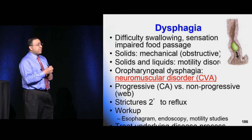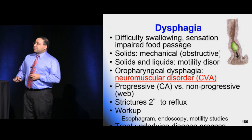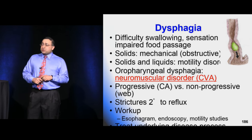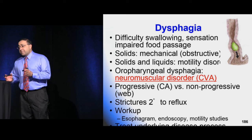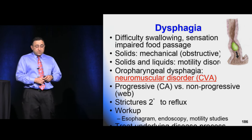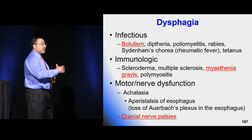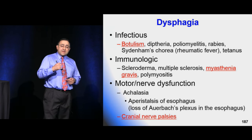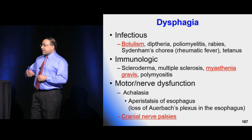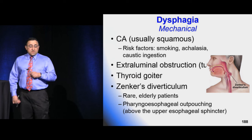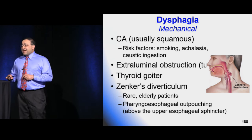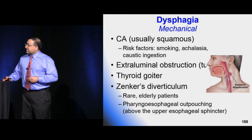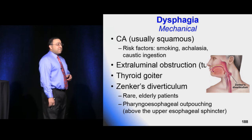Starting with dysphagia — the most common cause is mechanical obstruction, but think about more unusual dangerous things: intrinsic or neurologic causes. Someone may have had a previous stroke. Think about infections like botulism — not something we normally consider when someone says food is stuck in their throat, but on the board exam think about it. Think about diphtheria, polio, myasthenia, and bulbar and cranial nerve palsies as potential causes.